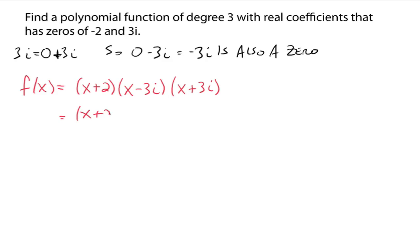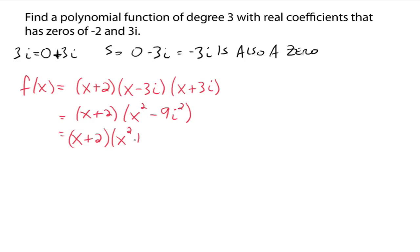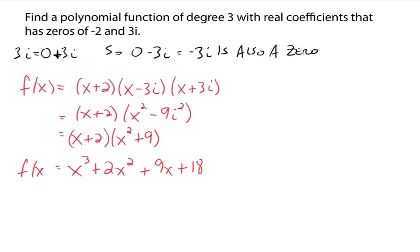Then we just multiply all this out. I would do the complex ones first: x minus 3i times x plus 3i goes to x squared minus 3xi plus 3xi — those cancel out — minus 9i squared. That goes to x plus 2 times x squared plus 9, because i squared is negative 1. So that expands to x cubed plus 2x squared plus 9x plus 18.